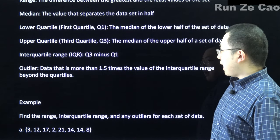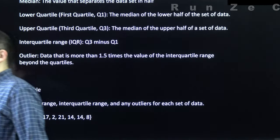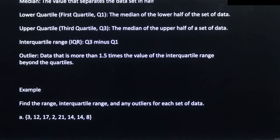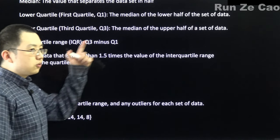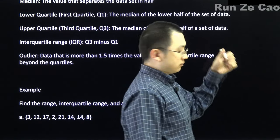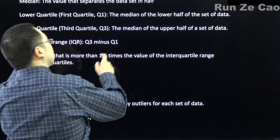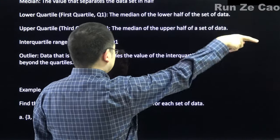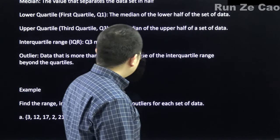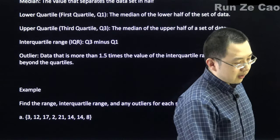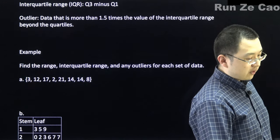An outlier is any data point that's more than 1.5 times the value of the interquartile range beyond Q1 or Q3. Note that this depends on convention — some use 3 times the IQR, and in scientific studies you may not note outliers at all on box and whisker plots. Let's find the range, interquartile range, and any outliers for each set of data.